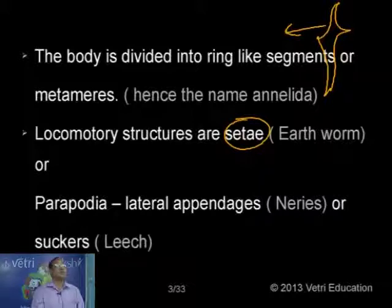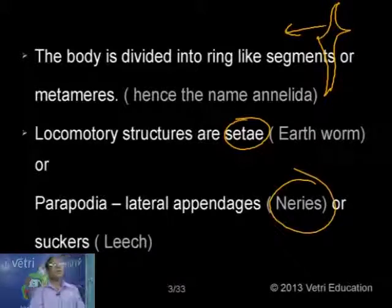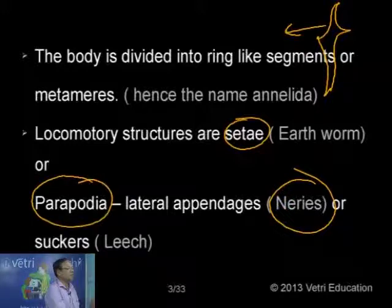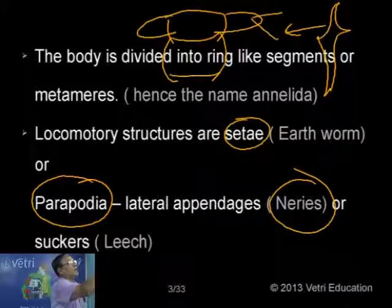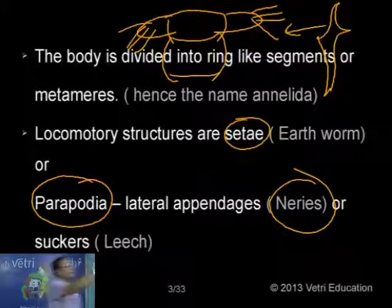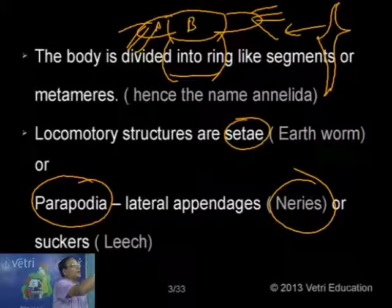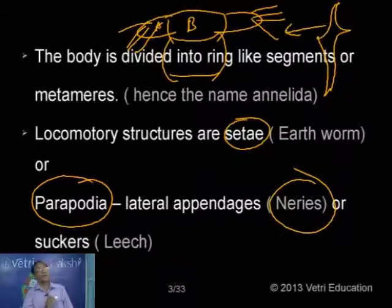In the case of some marine forms, like Nereis — a sandworm or clam worm — we have paired appendages on either side of each segment. These appendages are called parapodia. So parapodia are the locomotory structures of Nereis and marine worms. Then in the case of leeches, which are parasitic forms, they have suckers used for attachment and for movement.